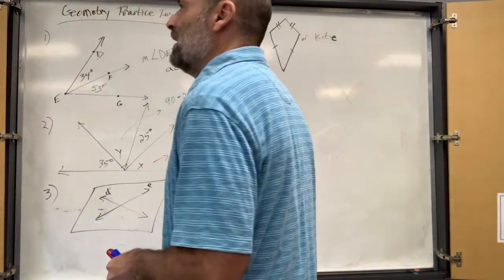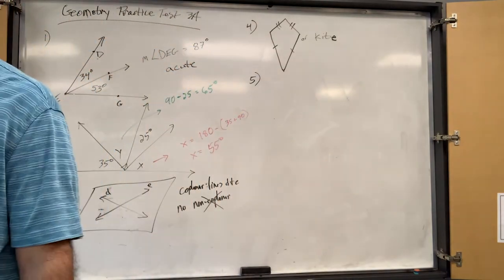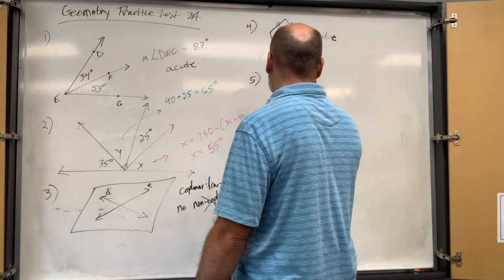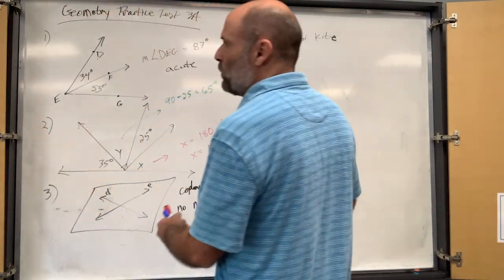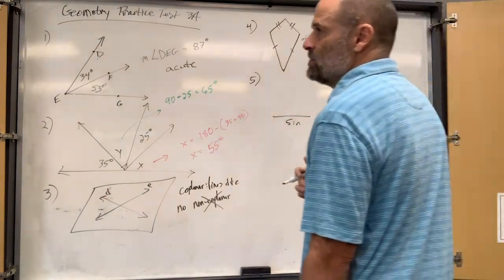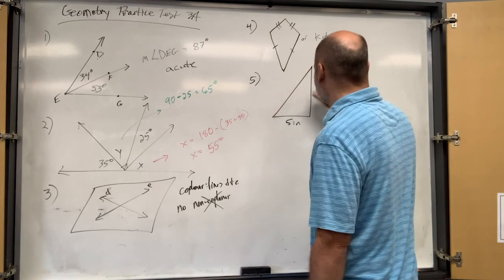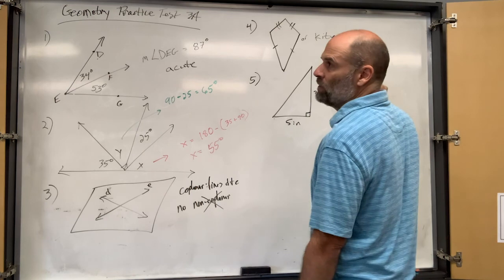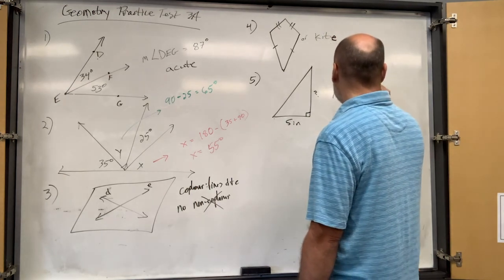Number five: the base of a triangle measures 5 inches and the area is 13.2 square inches — determine the height. We're trying to find the height. The area formula is one-half base times height.